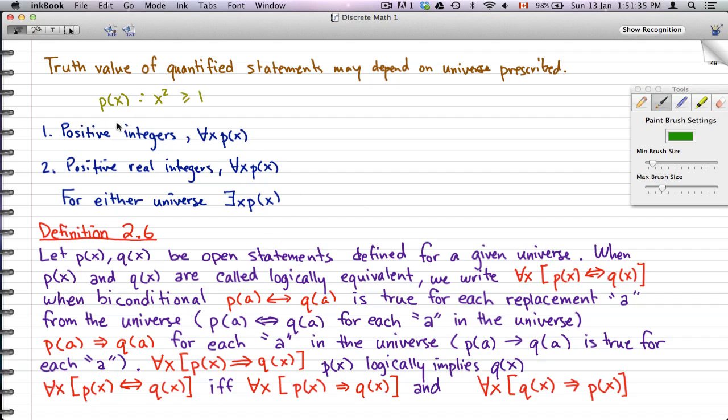So a little bit more before we finish the video. The truth value of quantified statements they always depend on the universe prescribed. So for example, the statements that we just went through in the last page, they might be true in some other cases, in some universe. So the truth value of quantified statements they always depend on the universe prescribed.